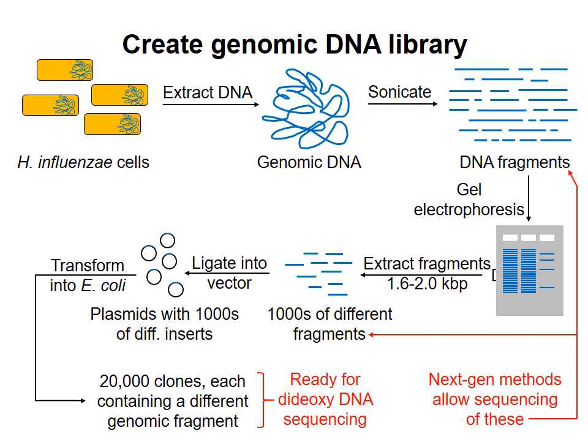In the previous video, I described how the researchers who sequenced the genome of Haemophilus influenzae constructed a genomic DNA library for the organism. The genomic library is the collection of plasmids, each of which contains a different insert representing 1,600 to 2,000 base pairs of the genome.